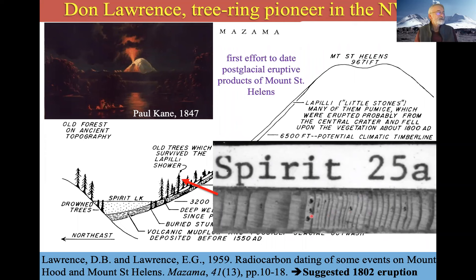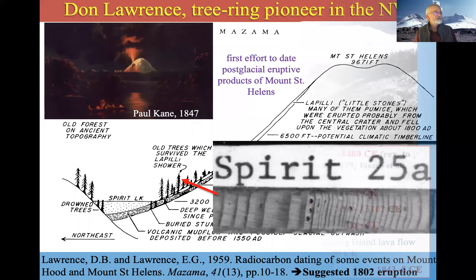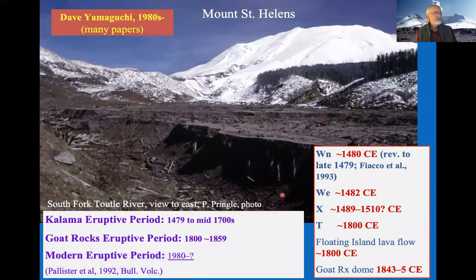David Yamaguchi later came to study those same trees and dated them properly by cross-dating from before the event rather than simply counting rings from the trauma. He found two missing rings and determined the eruption actually happened in 1800—not 1802. Still, Don Lawrence was a pioneer—he was really the first person to do this kind of work.